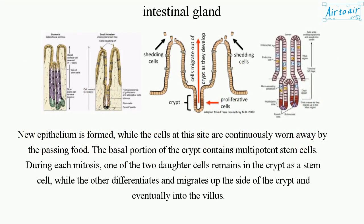New epithelium is formed while the cells at this site are continuously worn away by the passing food. The basal portion of the crypt contains multipotent stem cells. During each mitosis, one of the two daughter cells remains in the crypt as a stem cell, while the other differentiates and migrates up the side of the crypt and eventually into the villus.